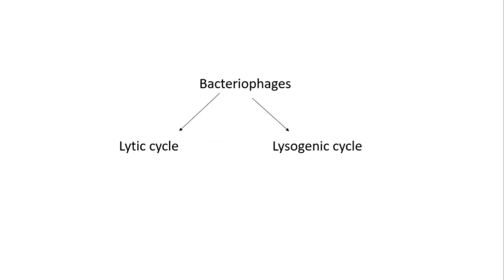Bacterial phages use two methods for their multiplication or replication: one is the lytic cycle and another is the lysogenic cycle. So first, let's start with the lytic cycle.